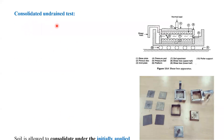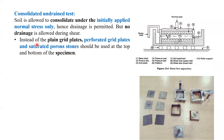The next method is the consolidated undrained test. Here, to consolidate the soil, we must use porous plates. The soil is allowed to consolidate under the initially applied normal stress only, so consolidation takes place due to the normal load on the hanger. After consolidation, drainage is not allowed and then we start shearing the sample. Perforated grid plates and saturated porous stones should be used at the top and bottom of the specimen.